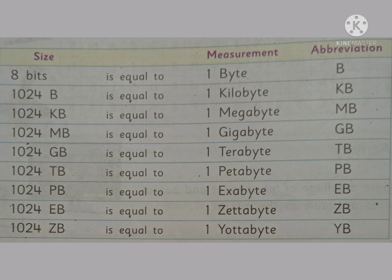1024 megabytes or MB is equal to 1 gigabyte, GB. We are using 1 GB per day, right? 1 GB is equal to 1024 megabytes. Next, 1024 gigabytes is equal to 1 terabyte, TB. Then, 1024 terabytes is equal to 1 petabyte, PB.